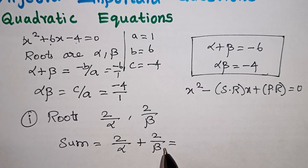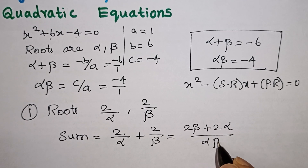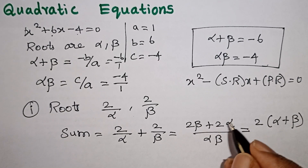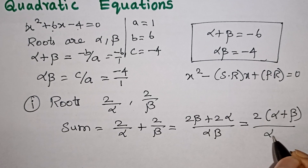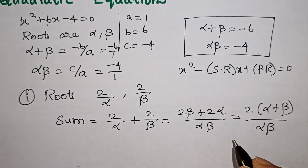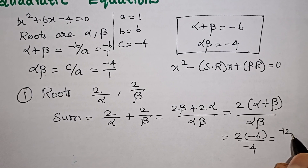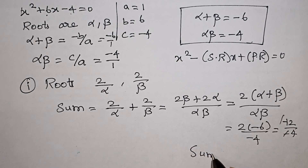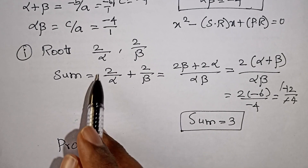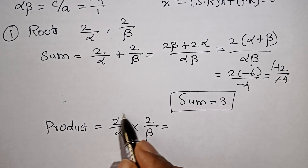Adding 2/alpha and 2/beta by cross-multiplying the denominators: (2·beta + 2·alpha) / (alpha·beta). Taking out 2 as common, we get 2(alpha + beta) / (alpha·beta) = 2 × (minus 6) / (minus 4) = minus 12 / minus 4 = 3. So the sum of the roots equals 3. Next, the product.